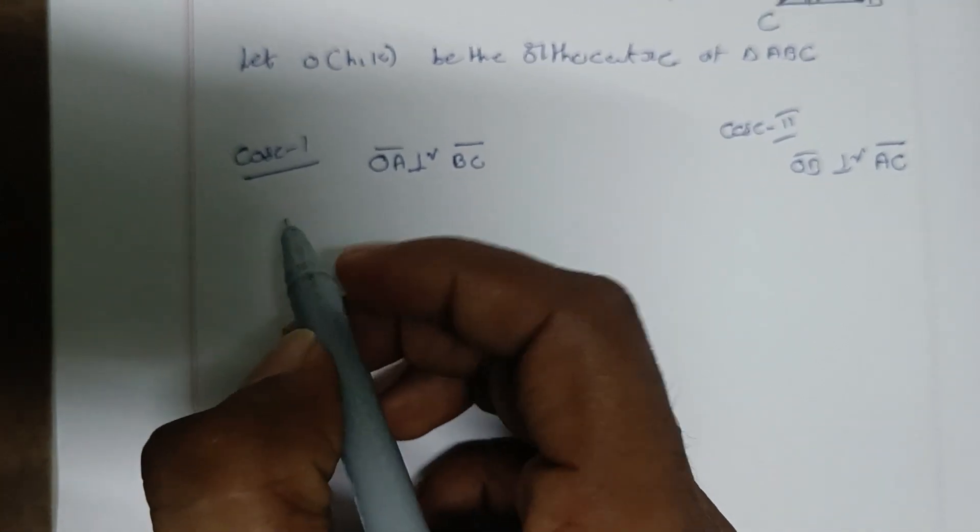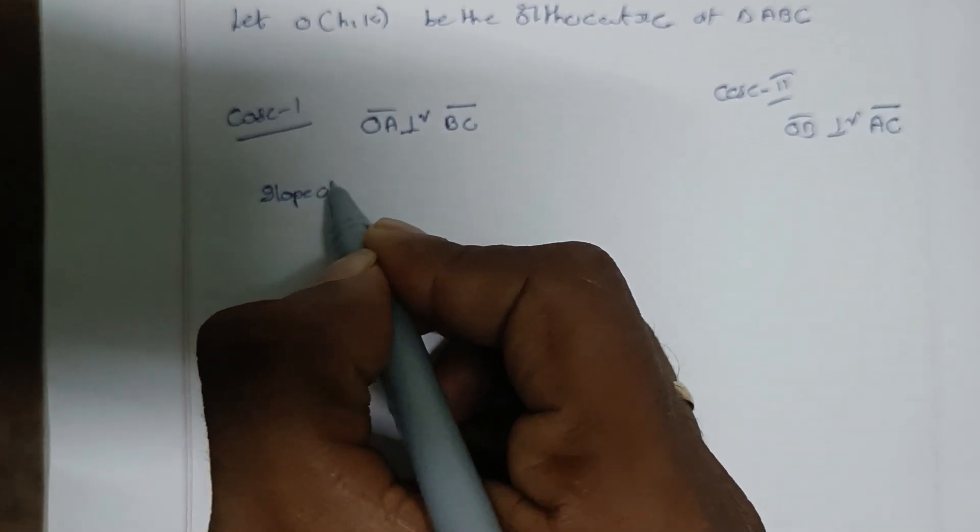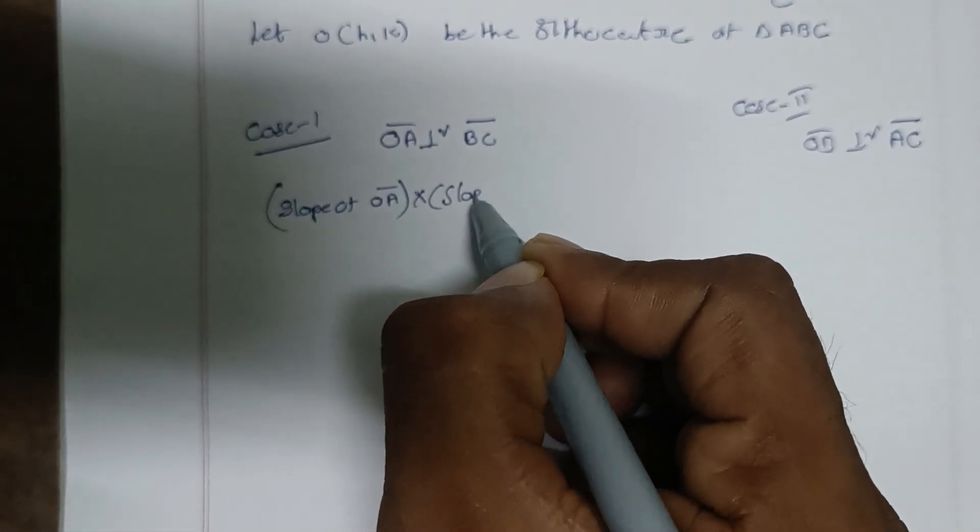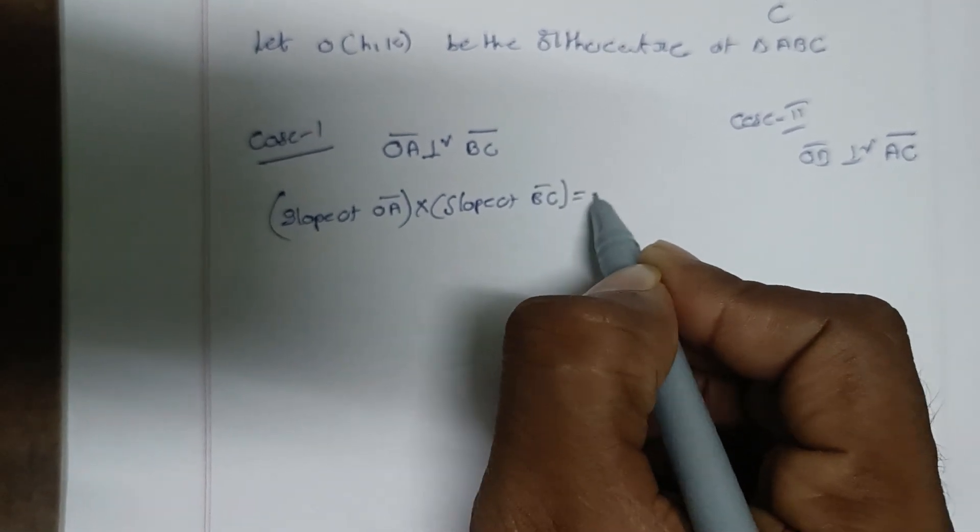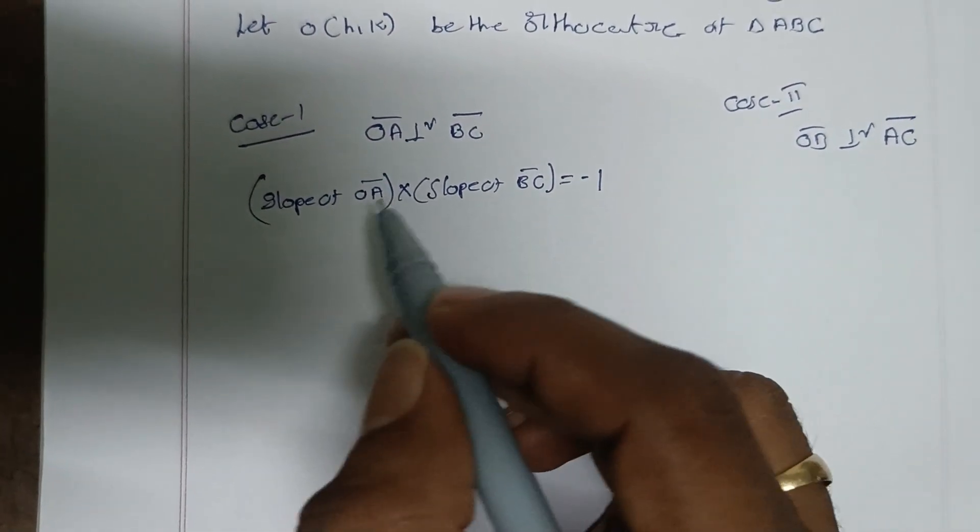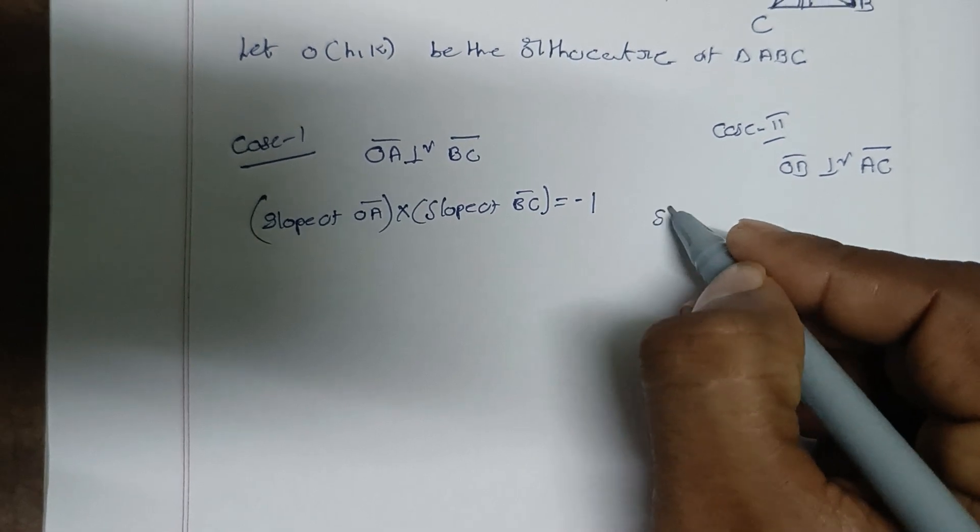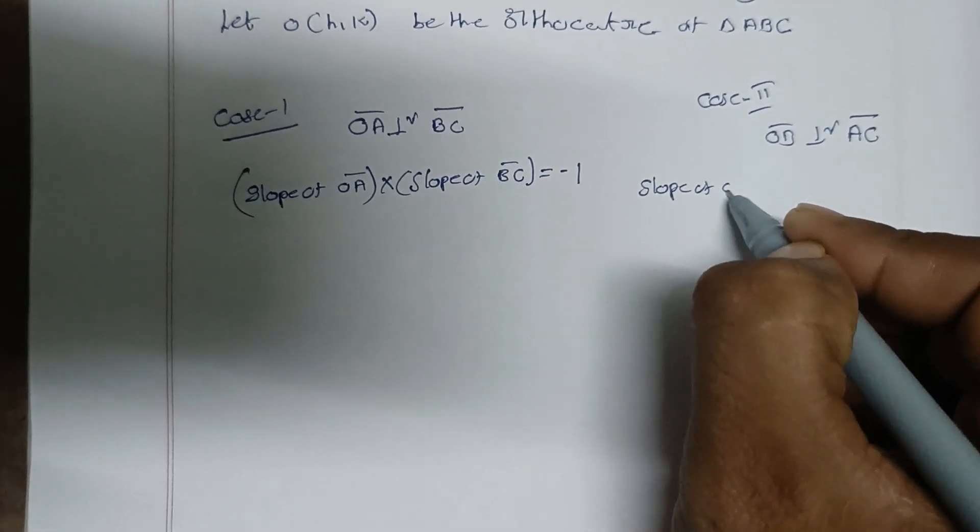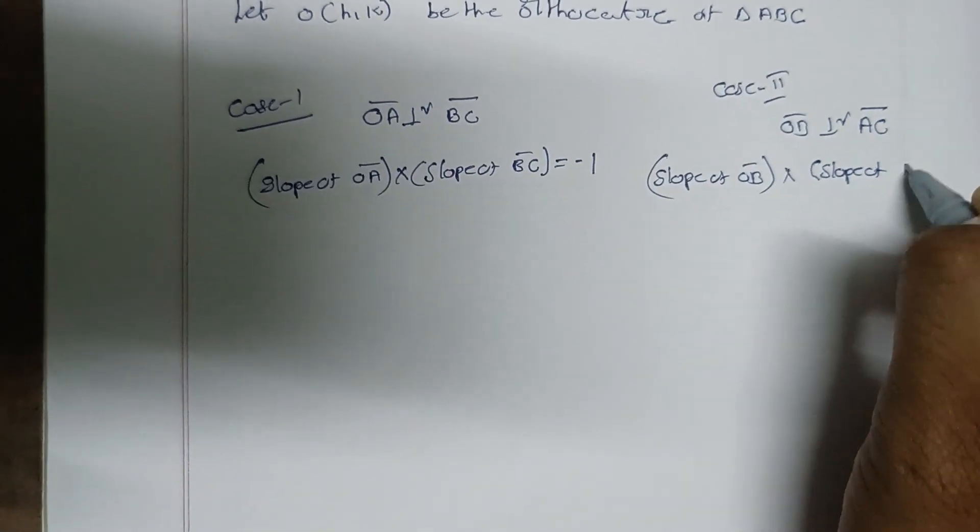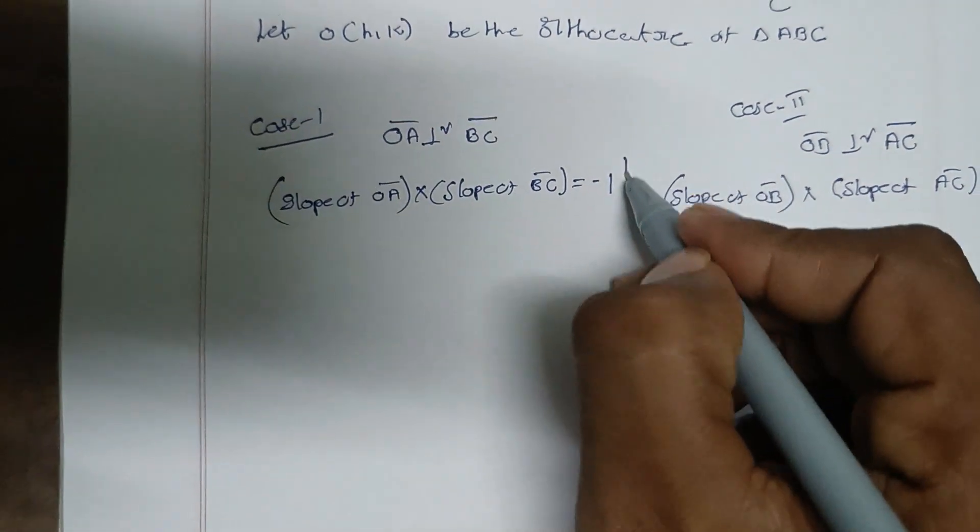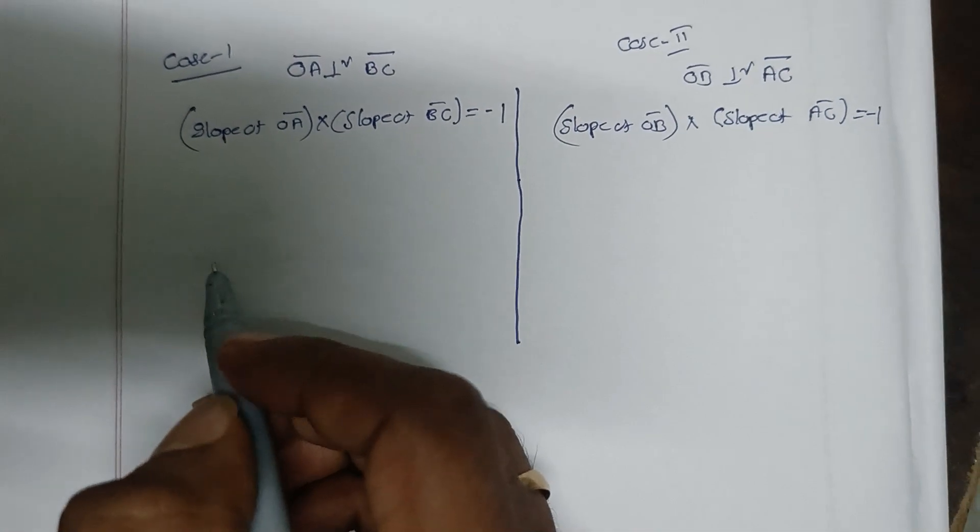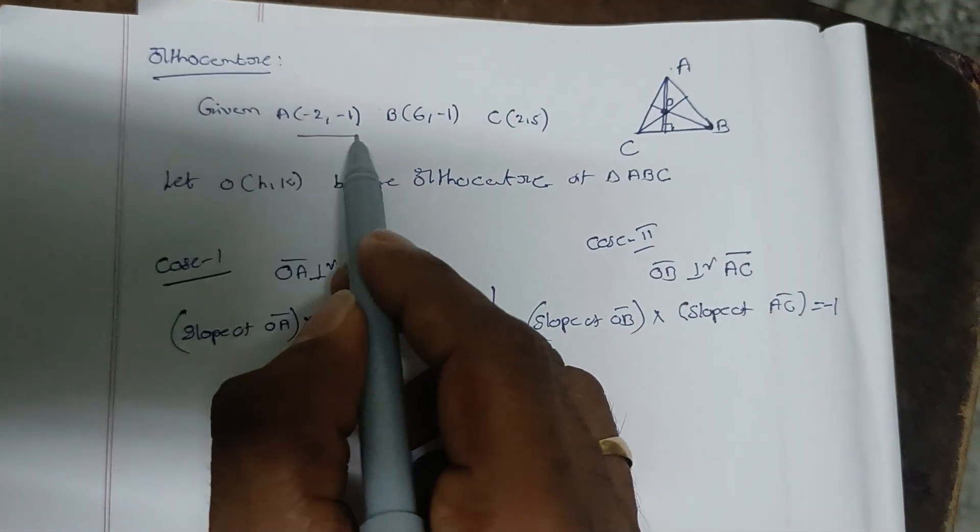When two lines are perpendicular, the product of their slopes equals minus 1. So slope of OA bar times slope of BC bar equals minus 1. Similarly, slope of OB bar times slope of AC bar equals minus 1.